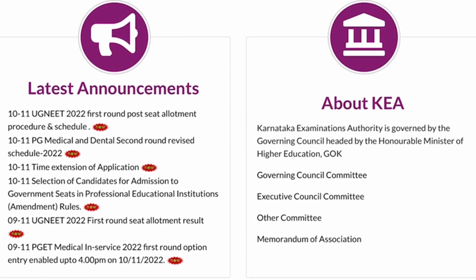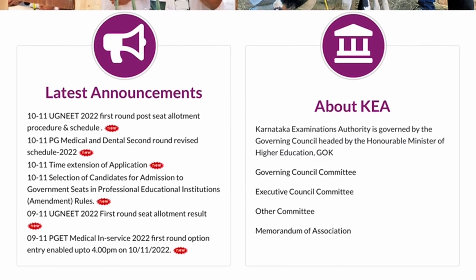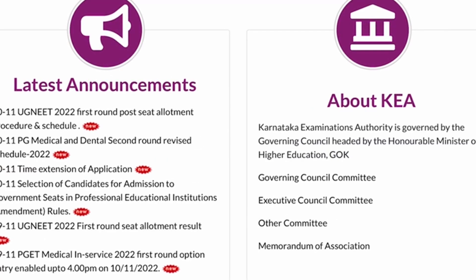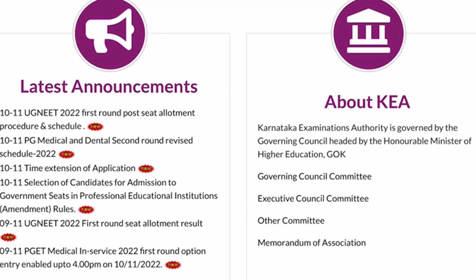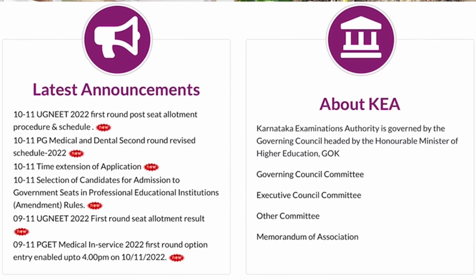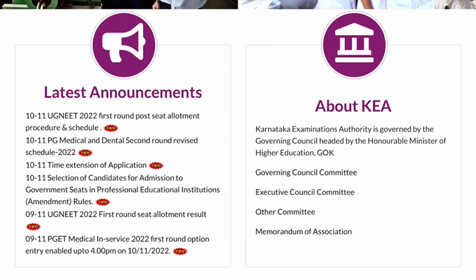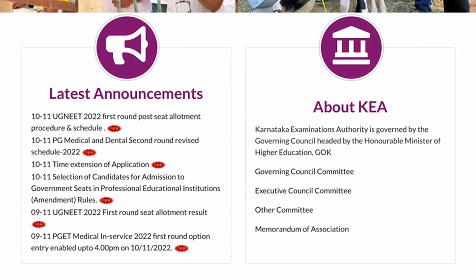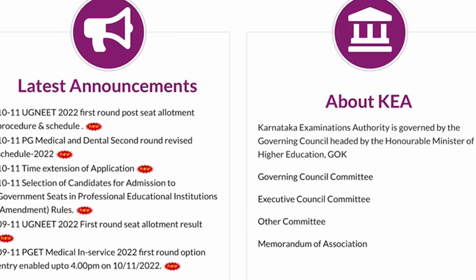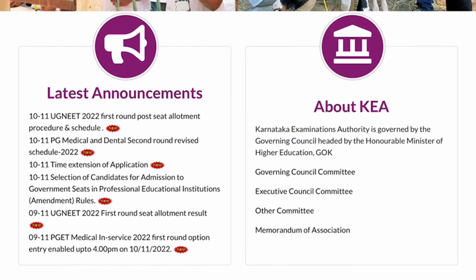Hi students, welcome to our YouTube channel. Today you will see the NEET first round post seat allotment procedure and schedule on the KEA website. As you know, the options entered by the candidate for the first round will remain the same for subsequent rounds — you will not be allowed to enter options again. Whatever options were entered before will remain the same for the second and third rounds. On the home page, the first round post seat allotment procedure and schedule is listed — just click on it.